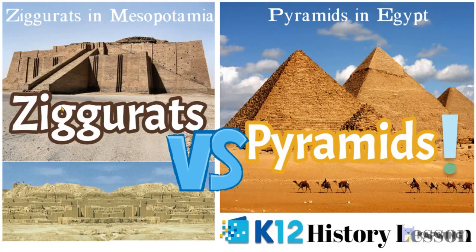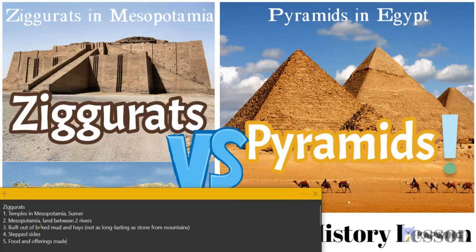They didn't use stone because there were no cliffs around where they lived, but in Egypt they did. So they cut out the stones from the cliffs and shaped them — it was a long and hard process to build these beautiful, magnificent monuments. Ziggurats have stepped sides, whereas pyramids used to be smooth on the outside, but since it's been thousands and thousands of years, the smooth exterior of the pyramids has receded. So now you can see just the stones on the outside.